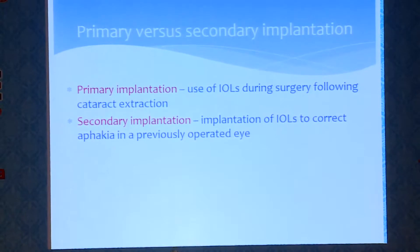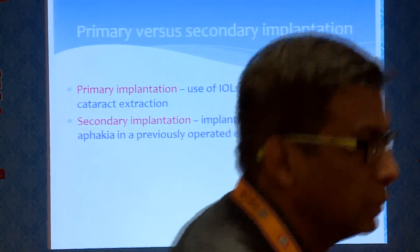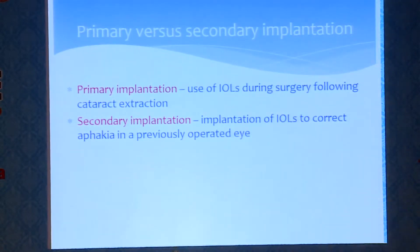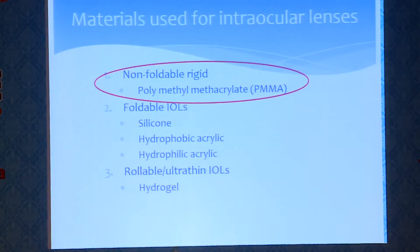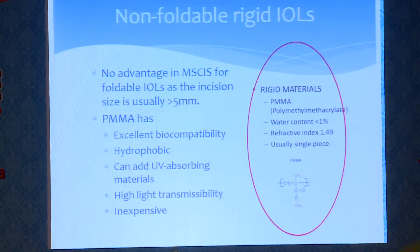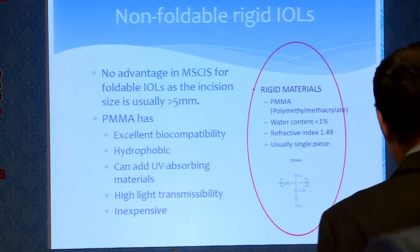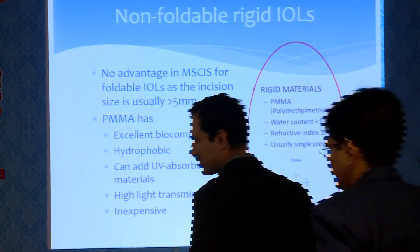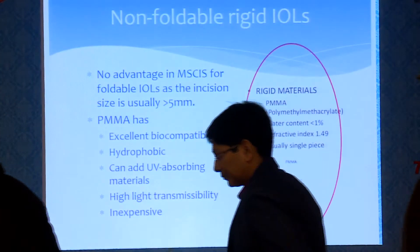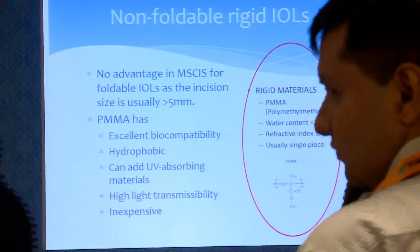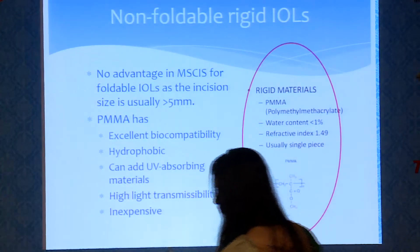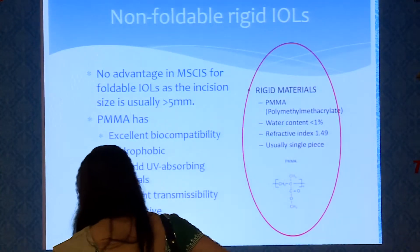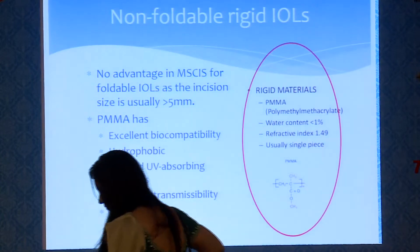What we are going to discuss today is primarily implantation, which is the use of intraocular lenses during surgery following cataract extraction. Non-foldable lenses are generally used in SICS due to the large wound, as there is not much advantage for foldable IOLs since the incision is normally more than 5mm. PMMA has excellent biocompatibility, is hydrophobic, can incorporate UV absorbing materials, has high light transmissibility, and is fairly inexpensive.